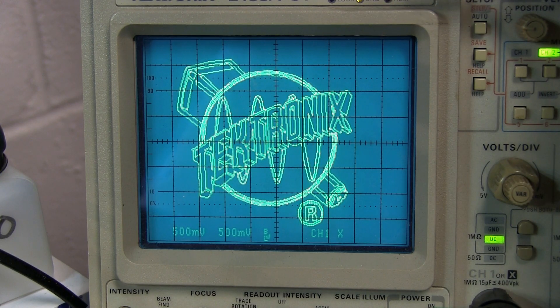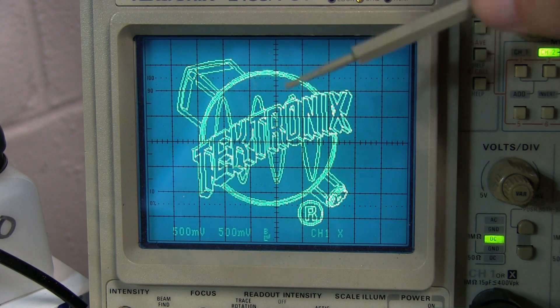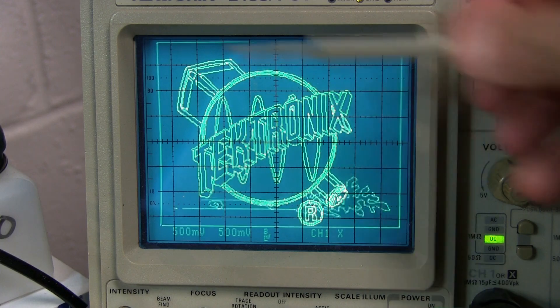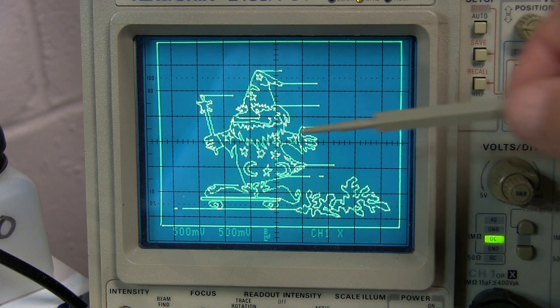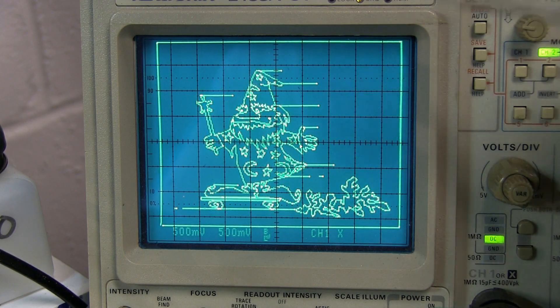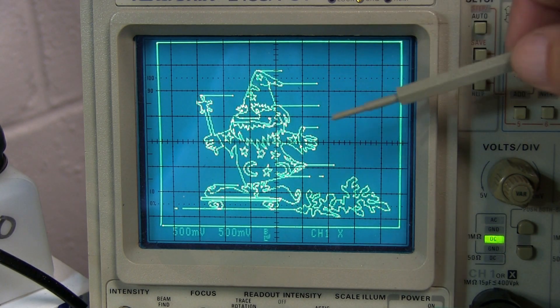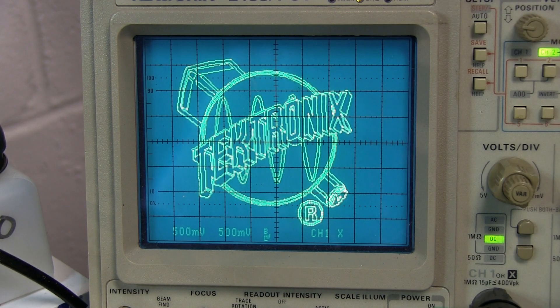Now a digital scope is going to work differently. It has to sample both inputs and then display those XY samples as points, and it doesn't generally do a good job in connecting those points, certainly in XY mode. So the graphics aren't going to be nearly as clear and sharp. Let me show you what I mean.